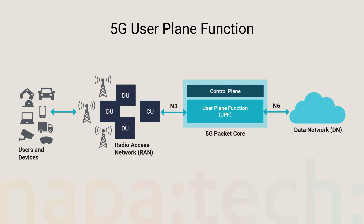The UPF represents the highest compute workload within the packet core, performing functions associated with connecting user traffic from the radio access network to the data network.